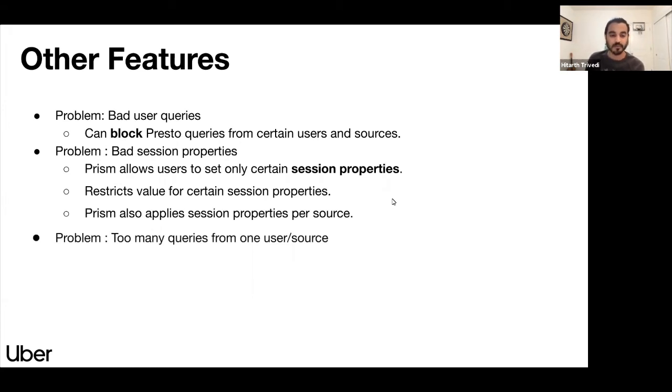Prism also applies session properties per source and also the value of this session properties. Prism has a way in which it can restrict the value to a certain range. So for example, query time limit, we have set let's say a query time limit of 30 minutes. Prism can check this value and it can make sure that it is not more than 30 minutes. So it can be less than 30 minutes but it can never be more than 30 minutes so that users cannot run a query and abuse the system. Another issue that we had seen was too many queries from one user. So in order to tackle that problem we added rate limiting feature. Since Prism is cluster of clusters it knows the entire ecosystem. It knows the global view of all the running queries from a source as well as from a user on all the given clusters. So based on that information we can set a limit on how many concurrent queries a particular user or a source can run at a time. So all these features have been really useful in maintaining the reliability and the availability of Presto cluster at Uber.